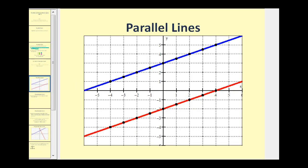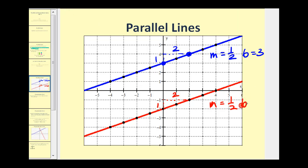Let's take a look at this one more time. Here we have two different lines — let's determine the slope of each. Looking at the blue line, if we pick two convenient points, we can see the slope would be up one and right two, so the slope of the blue line is equal to one-half. The slope of the red line, going up one and right two, is also equal to one-half. The y-intercept of the blue line is positive three, and the y-intercept of the red line is negative two. So the slopes are the same and the y-intercepts are different, so we have parallel lines.